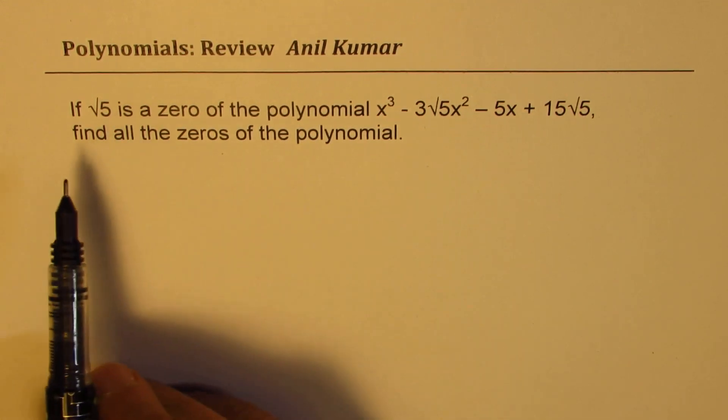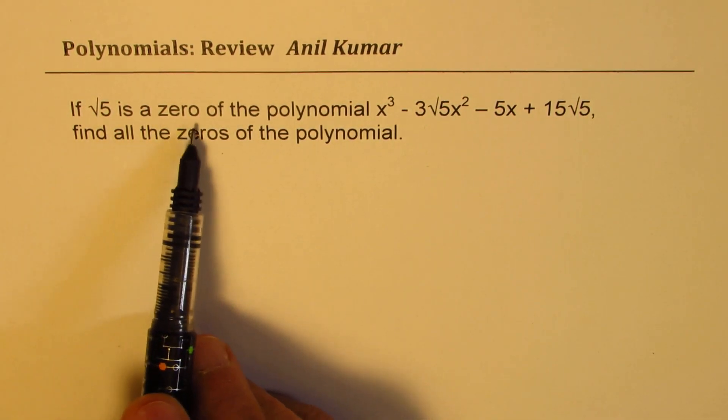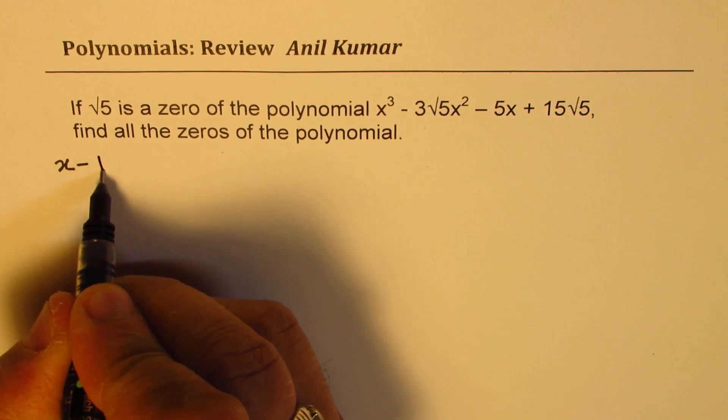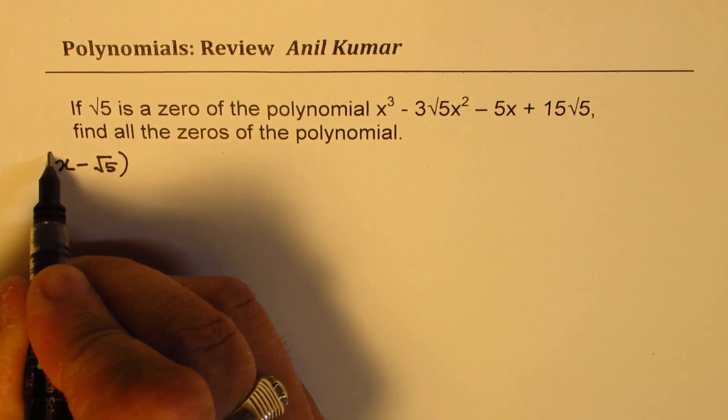Now, once we say that square root 5 is a zero, that means that x minus square root 5 is a factor. So this is a factor.